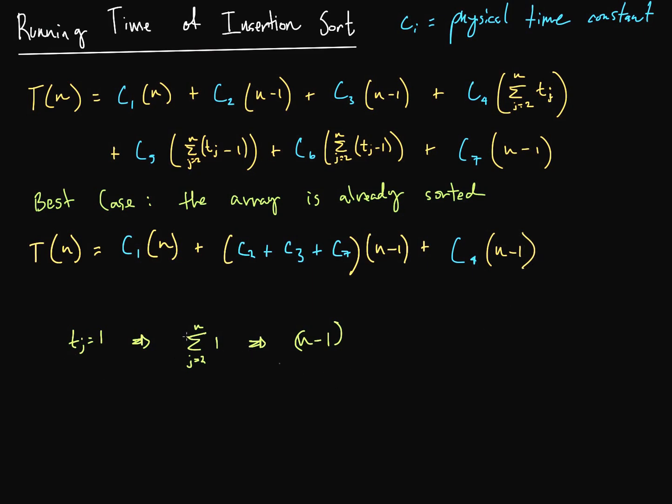And if that doesn't make sense to you, check out the video before this. And now, if t_j is equal to 1, then t_j minus 1, right? 1 minus 1 is 0, so these are both 0, and that's it. Now let's just condense this a little further.